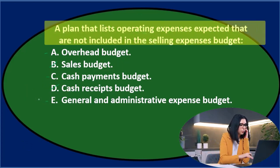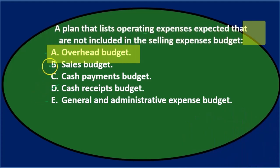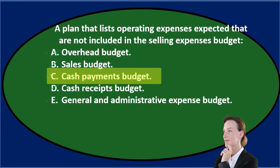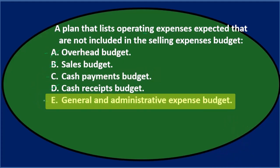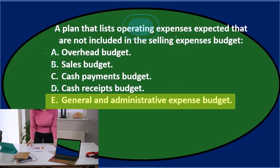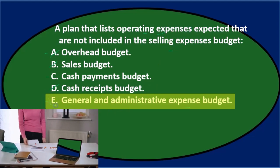A plan that lists operating expenses expected that are not included in the selling expenses budget. Is it the overhead budget? We're talking about operating expenses — this is typically cost of goods sold, so I don't think it's that one. C says cash payments budget versus E saying general and administrative expense budget. Of the two, E is an expense. On a multi-step income statement, operating expenses typically consist of selling and administrative expenses. They then eliminated the selling expenses, which leaves us with the general and administrative budget — answer E.